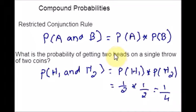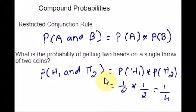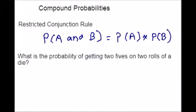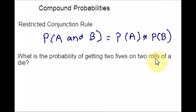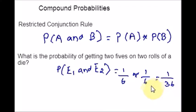For the same rule, we can find the probability of getting fives on two rolls of a die. If you are rolling a die, you will get six possible outcomes. Getting a five is one out of six. So rolling two dice, in the first roll it's one out of six, and in the second roll it's one out of six. So the probability would be 1 over 36.